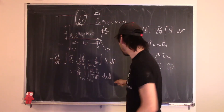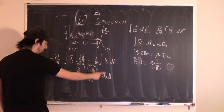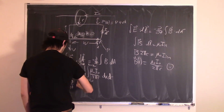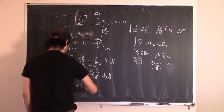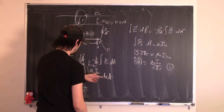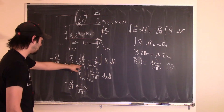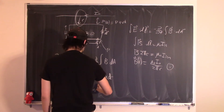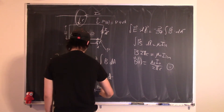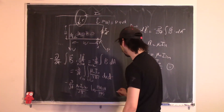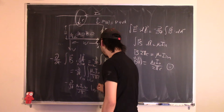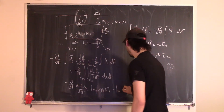Evaluating the integral with respect to X is straightforward since nothing depends on X. This gives minus partial derivative with respect to time of mu-naught I-naught W divided by 2π times the integral of dR/R from P to P plus H. That integral gives ln(P(t) plus H) minus ln(P(t)).